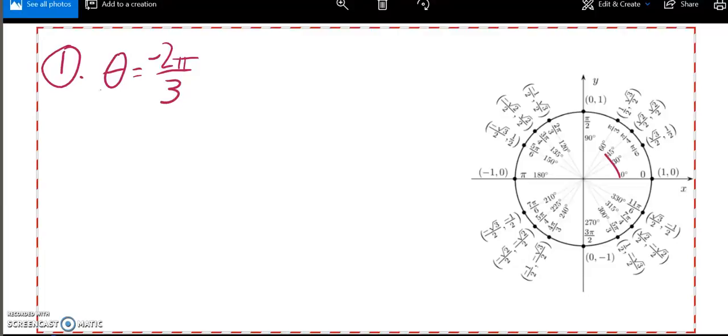So I noticed that a positive 2 pi over 3 rotation would take me here, so a negative rotation of that same amount would take me here. Another way to get that is just to add 2 pi to your value, and you can see that it does end up being 4 pi over 3.